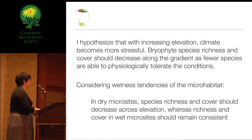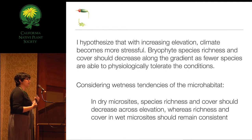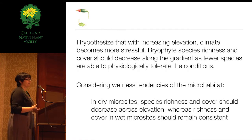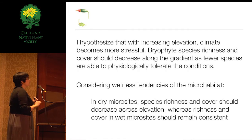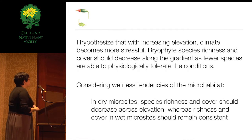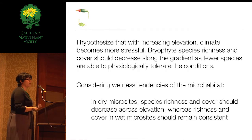I also took down descriptions of the species' niches. I'd like to talk about the wetness of the microsite—how did wetness affect species richness along the gradient? I also looked at shade, incline, and substrate type. For wetness, I hypothesized that in dry microsites, species richness and cover should decrease with increasing elevation, as the stress of climate would still be felt there, whereas richness and cover in wet microsites should remain consistent.